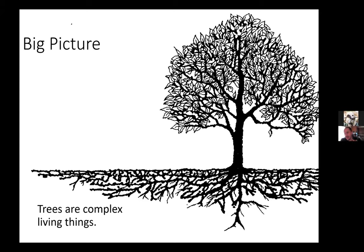I think most of us think we understand what a tree is, but there are some common misconceptions. This is a fairly accurate representation of what a tree looks like. It's important to remember that trees are complicated organisms with multiple parts — not just the leaves and stems above ground, but also the root system, which can actually be much more widespread than the canopy, usually two to five times as wide.